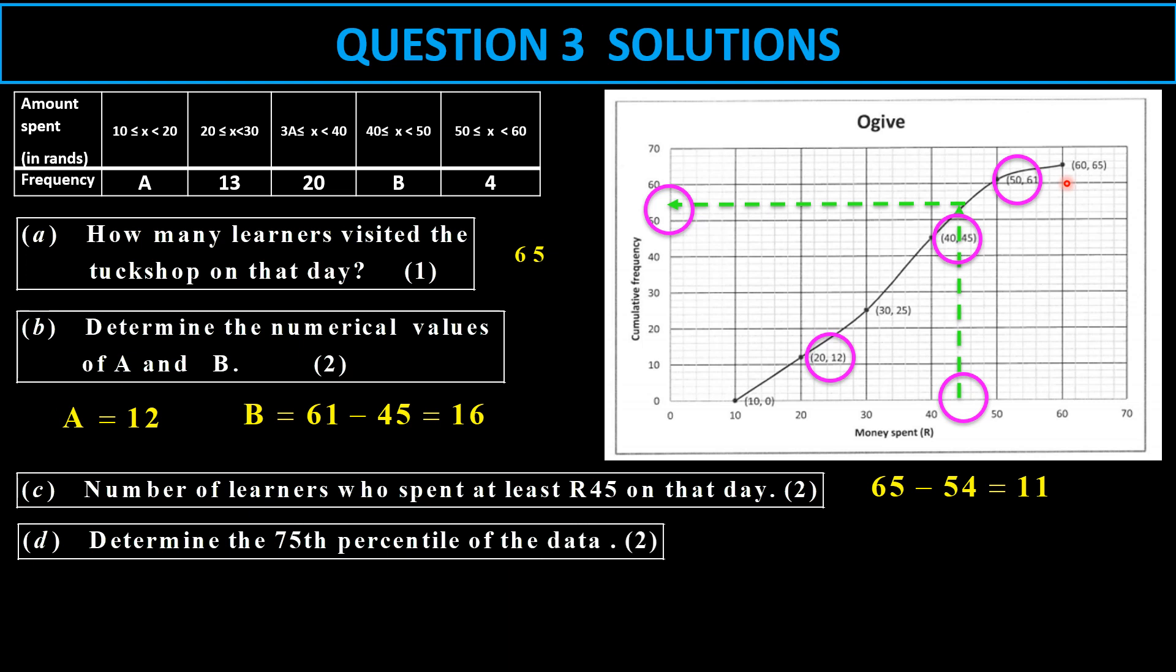75th percentile is 75% of the 60, which is 48.75. I take the reading and the reading at 75% there would be 42.